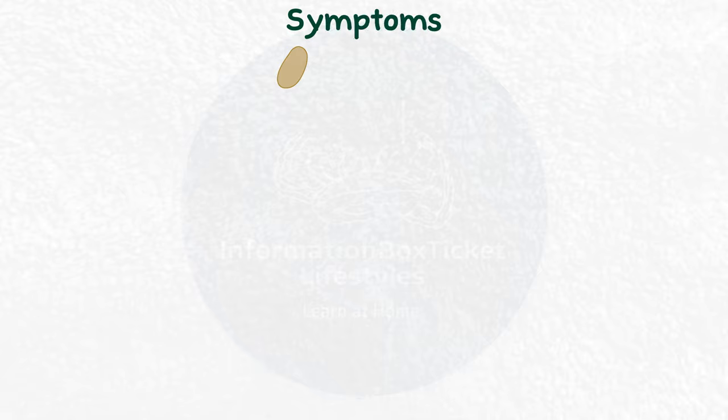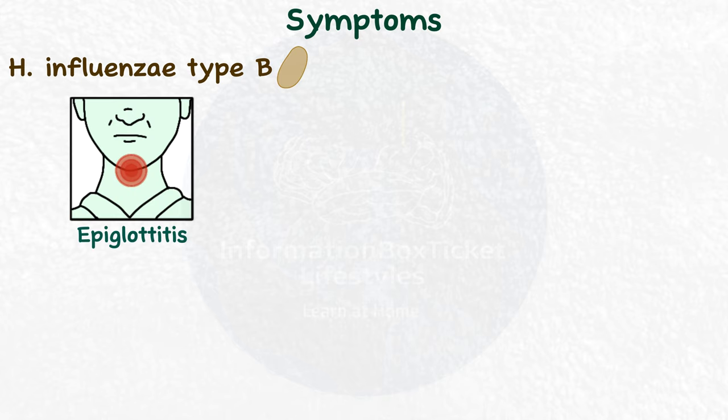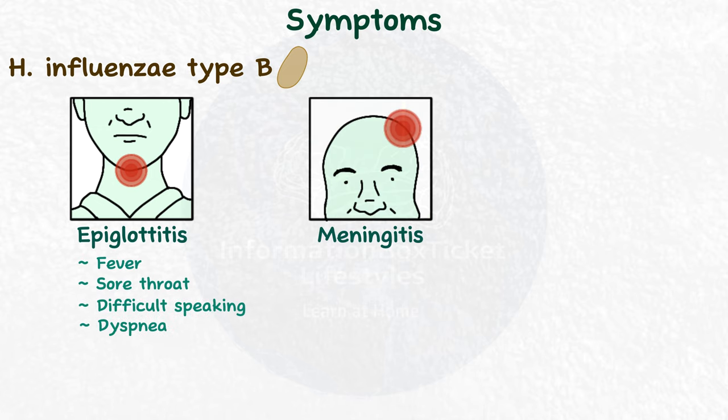Symptoms are disease-specific. For infections caused by Haemophilus influenzae type B: epiglottitis causes fever, painful throat, trouble speaking, and dyspnea; meningitis causes fever, tiredness, irritability, vomiting, a painful neck, and impaired mental state; cellulitis causes fever and a warm, sensitive region of erythema on the cheek or periorbital area. Bacteremia can cause fever, chills, hypotension, and tachycardia. Septic arthritis can cause fever, pain, swelling, and tenderness of the affected joint. Osteomyelitis can cause fever, bone pain, and weakness.